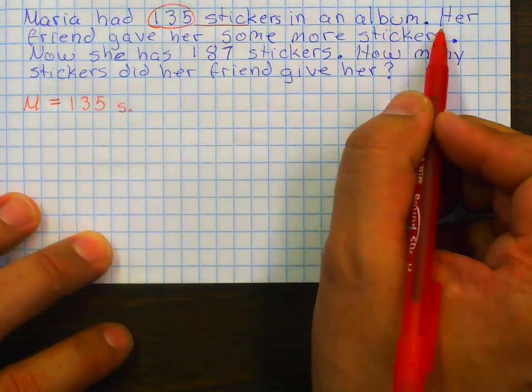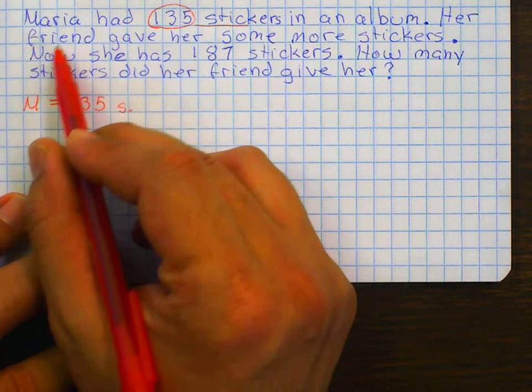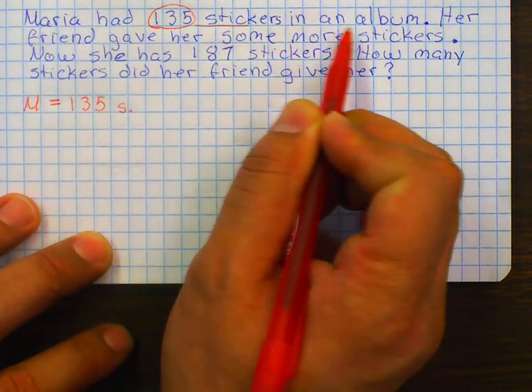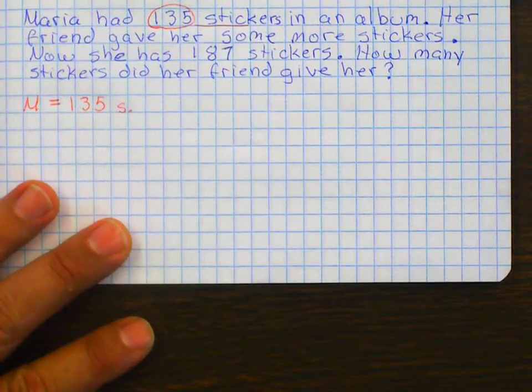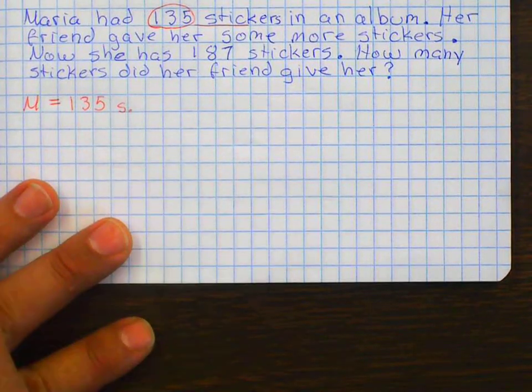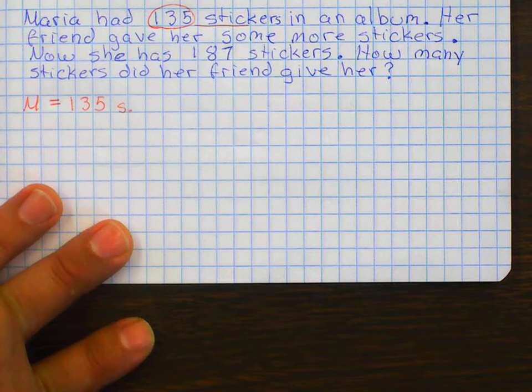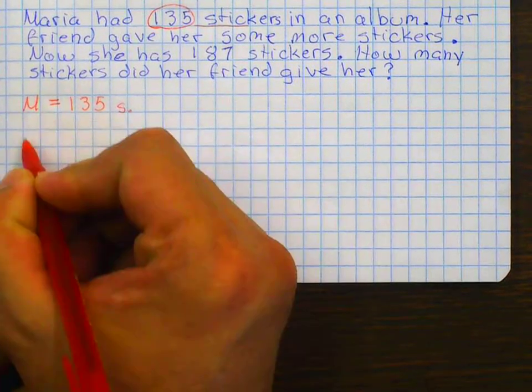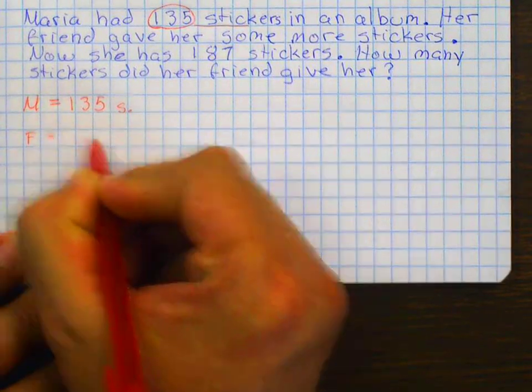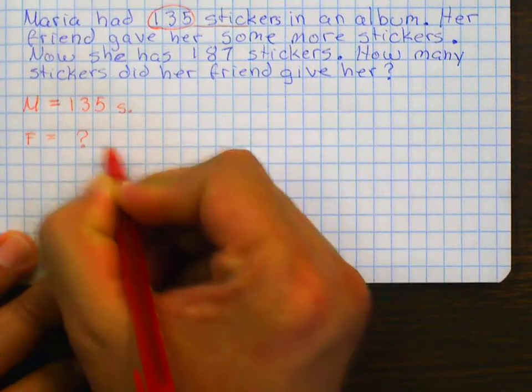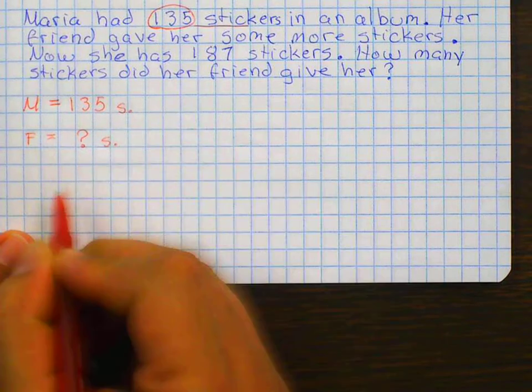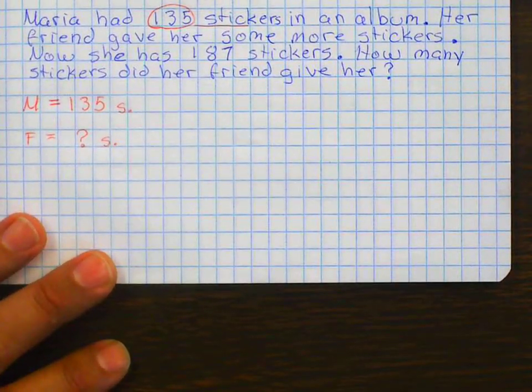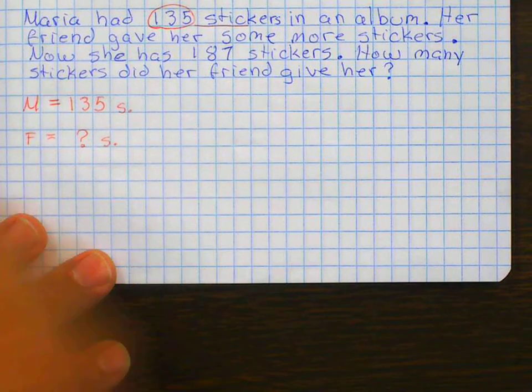Next sentence. Her friend gave her some more stickers. Her friend gave her more stickers. Do I know how many stickers her friend gave her? No. But I know that her friend gave her some more stickers. I don't know how many more, but I know she gave her some more stickers. We don't know what parts.